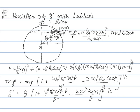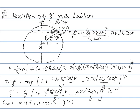If we consider the point mass at the pole, then phi equals 90 degrees. Therefore cos φ equals cos 90° equals 0. So G dash equals G. Thus acceleration due to gravity at the pole is maximum.